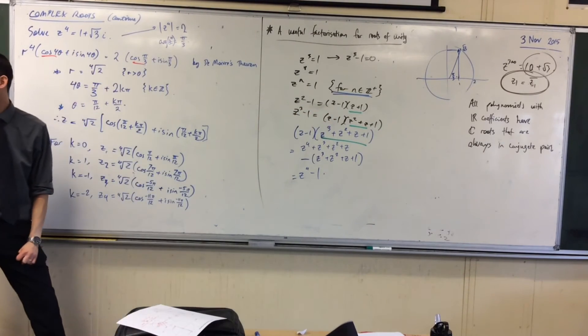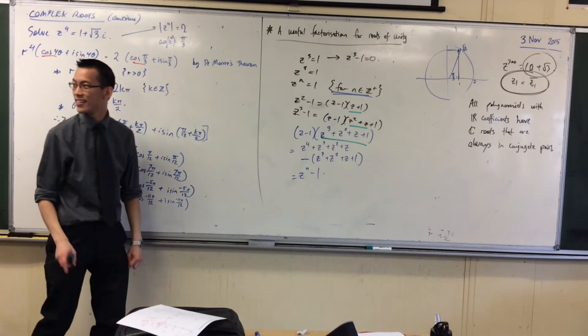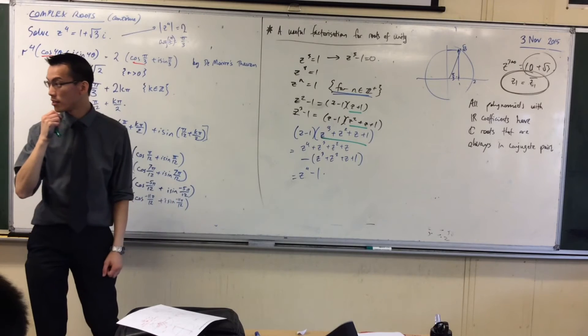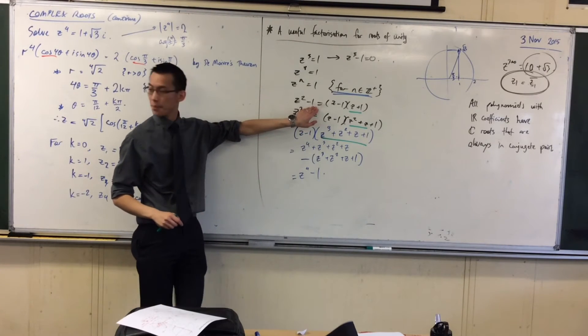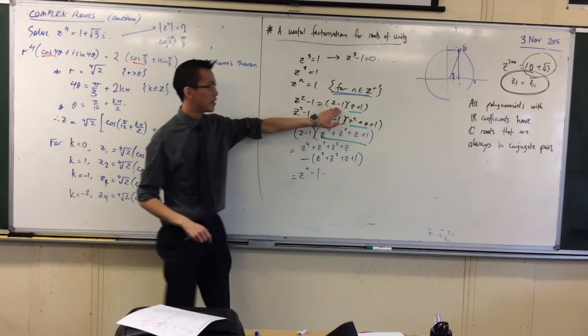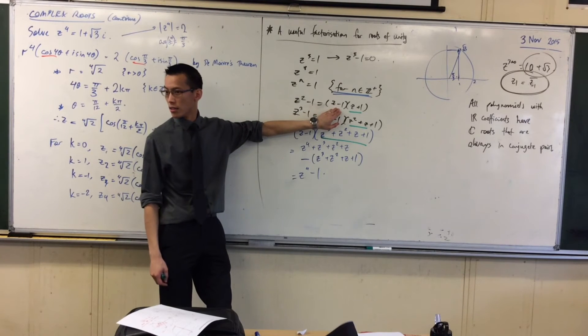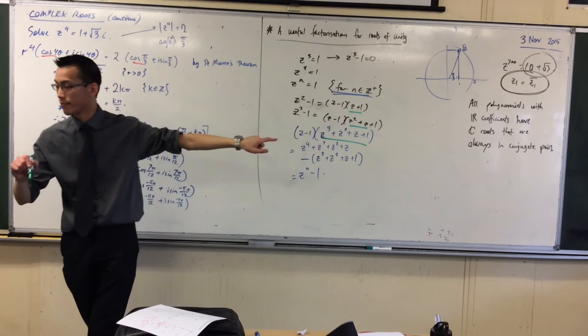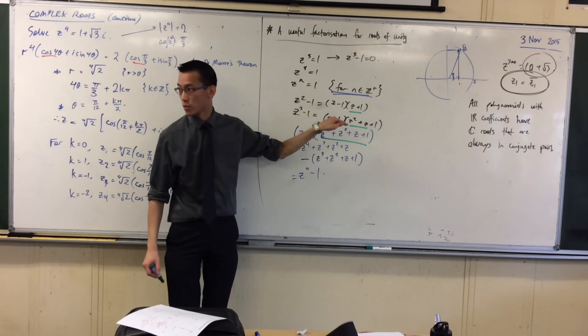Say it's like, set to the power of n equal to negative one, that the first term is z plus one. First term of what? Like, if you have set to the power of n equal to negative one. Then the roots of it, it's z plus one, then z whatever. No, it's z minus one.